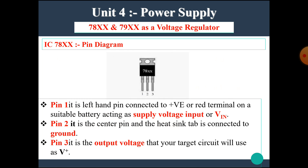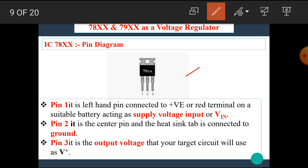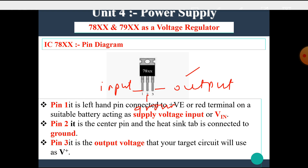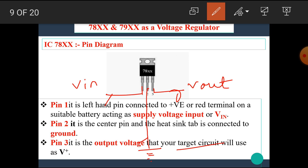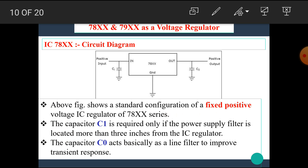This is the pin diagram of the 78XX voltage regulator ICs. Pin number 1 is the input pin, pin number 2 is the ground pin, and pin number 3 is the output pin. That means we can connect the input or unregulated supply to pin number 1 and pin number 2, and we can take the regulated or constant output from pin number 3 and pin number 2.